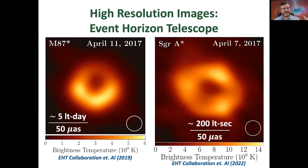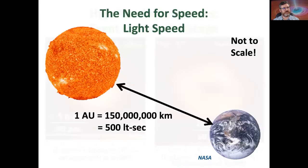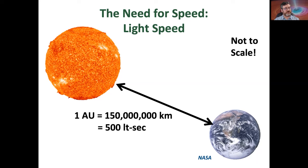The actual scales of these black hole shadows are much smaller than the light days I talked about. For M87, it's a super-supermassive black hole — the scale is about five light days. For Sagittarius A*, which is a much smaller supermassive black hole, it's about 200 light seconds. To give you an idea, the separation between Earth and our sun is about 500 light seconds — so we're talking about things on the scale of our own solar system.